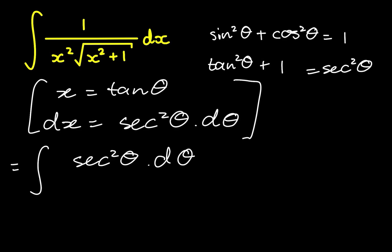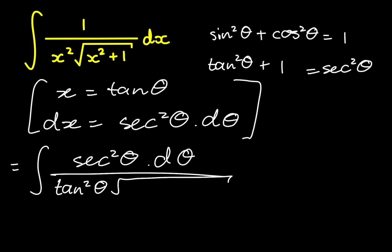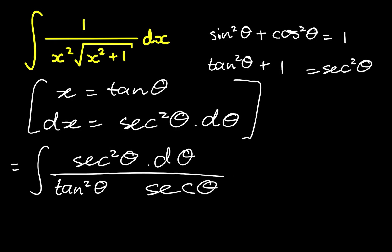For the denominator, x squared becomes tangent squared, so we have tan squared of theta, and within the square root we have tan squared of theta plus 1. But tan squared of theta plus 1 is secant squared of theta, so we rewrite that. When you root a square they cancel, and we're just left with secant of theta. Now we have secant of theta in the denominator and secant squared in the numerator, so we cancel one secant.